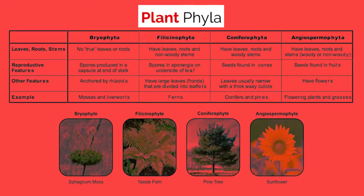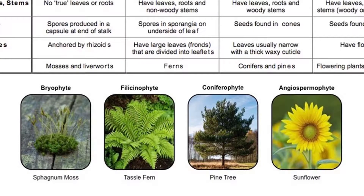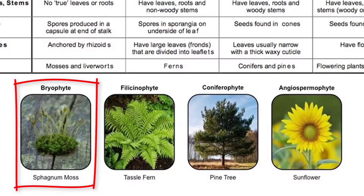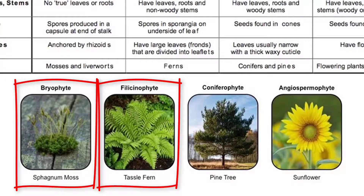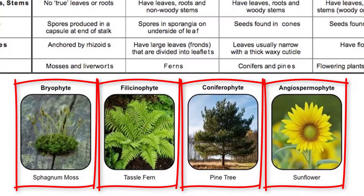For the IB exam, there are four plant phyla you need to recognize: Bryophyta, Filiciniophyta, Coniferophyta, and Angiospermophyta. Bryophyta consists of mosses, which have no true leaf or root structures. Filiciniophyta consists of ferns, which have leaves and roots but reproduce by creating spores, with very distinct-looking leaves. Coniferophyta consists of conifers and pine trees with heavy, woody stems that create cones filled with seeds to reproduce. Finally, Angiospermophyta consists of flowering plants, which have non-woody stems and create fruits with seeds to reproduce.